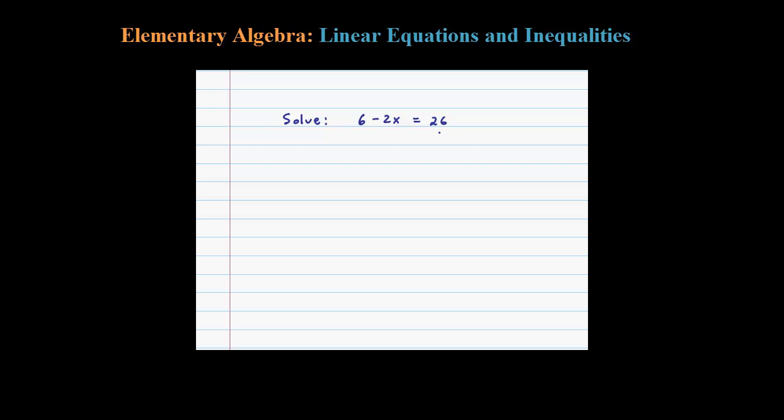Here we want to solve this linear equation. The first thing I notice is we have a positive 6. If I subtract 6 on both sides, 6 minus 6 is 0, so on the left side you'll be left with negative 2x. Don't forget to bring down that minus. On the right side, 26 minus 6 is 20.